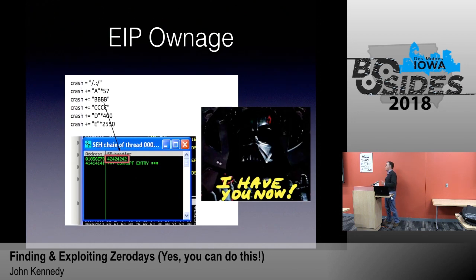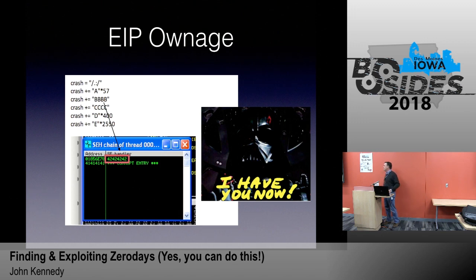So going through the pattern analysis that a lot of you have been taught, I determined that the override happened at 57. And so I crafted my string with 57 A's, 4 B's, and then some other things. Sent it again and saw that I had overwritten the structured exception handler and therefore the EIP with 4 B's — meaning I own the EIP.